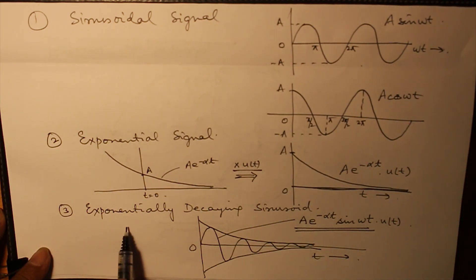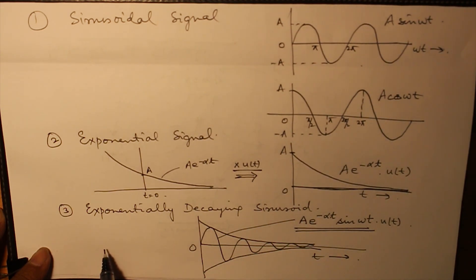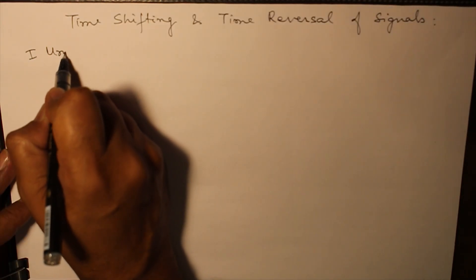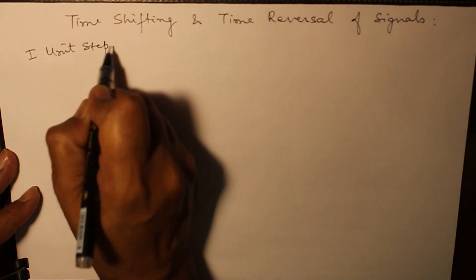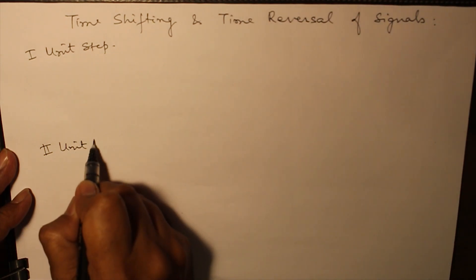Now, having discussed these signals, we will look at time shifting and time reversal operations which we will have to perform. First, we will do the unit step, then we will do the unit ramp.